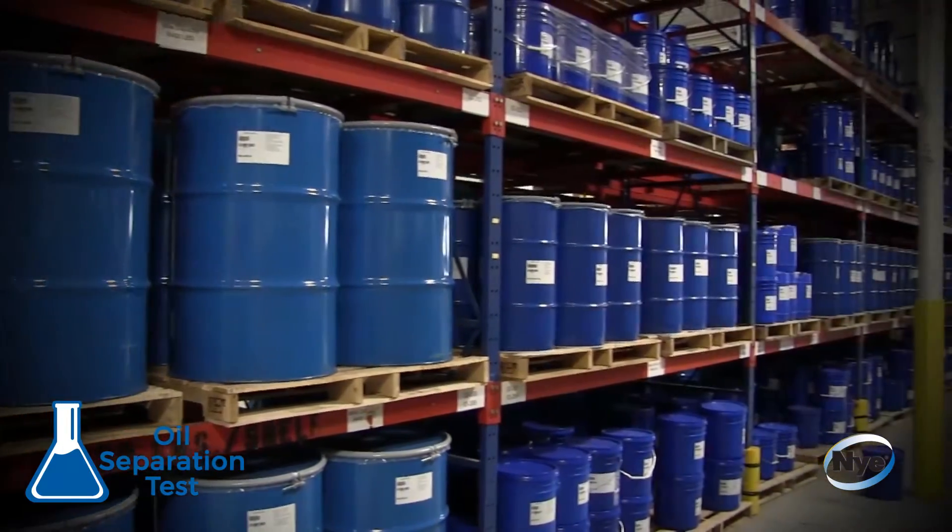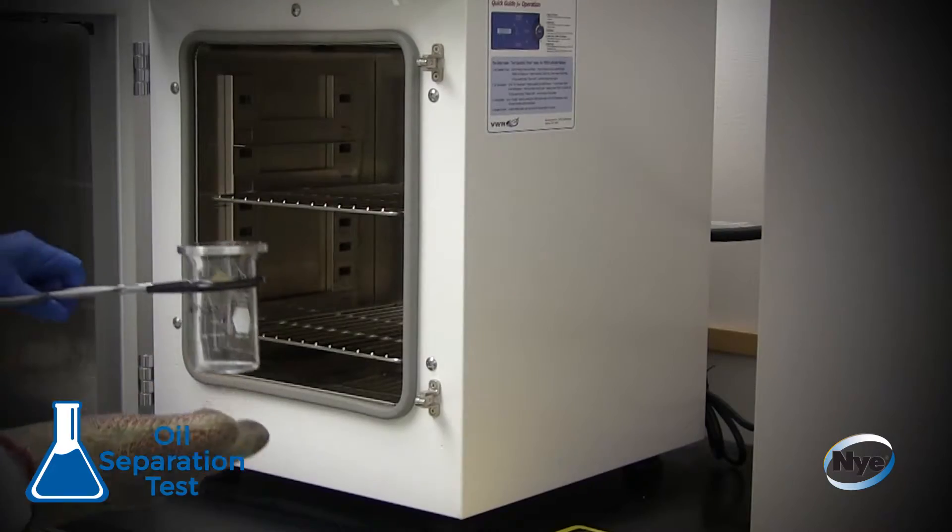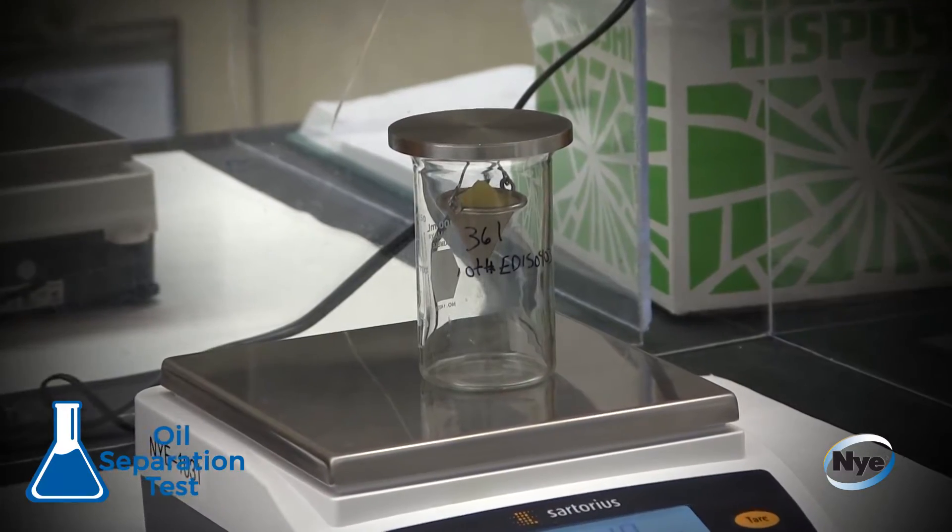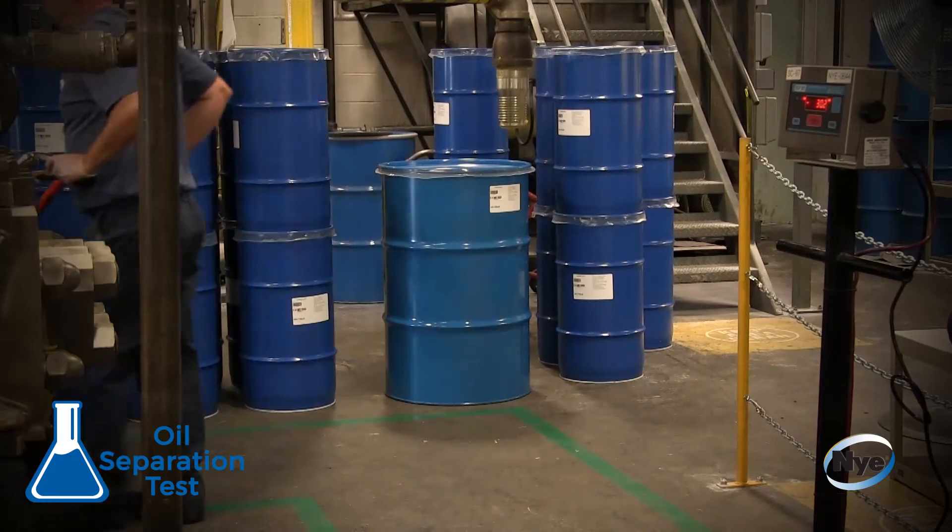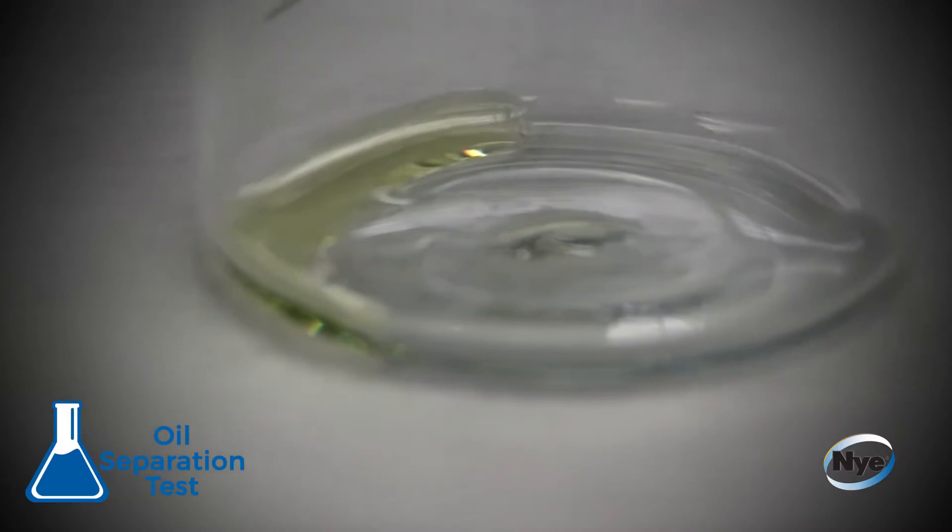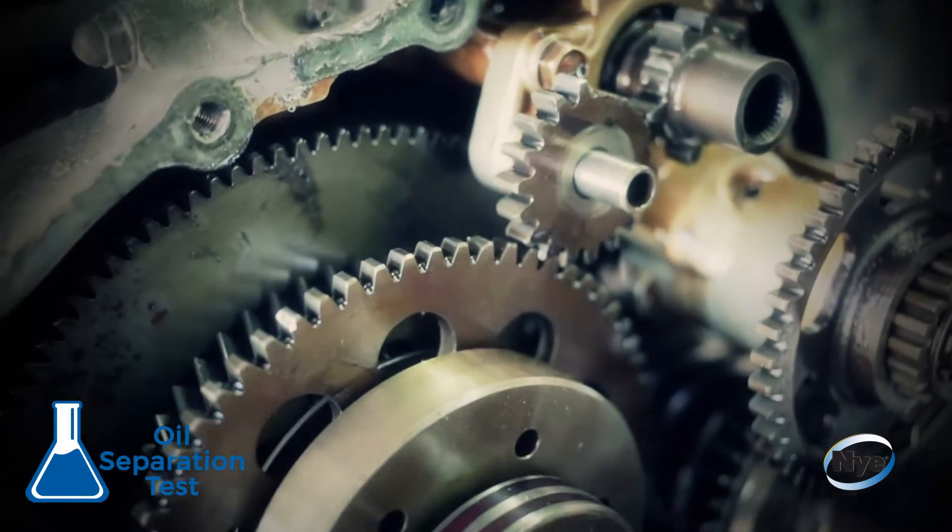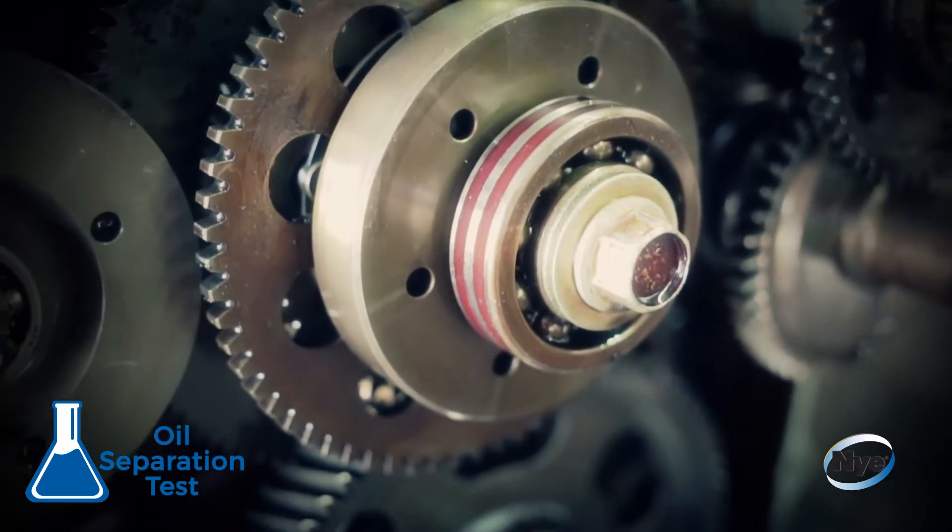An oil separation test monitors the separation of oil from grease at elevated temperatures for a defined period of time. The tendency of oil to separate during storage can be an important characteristic. When the base oil begins to separate from the other components in a grease, the remaining material may change in consistency and potentially affect the ability of the grease to function as designed.